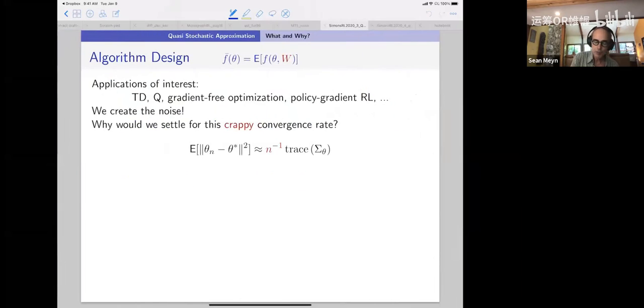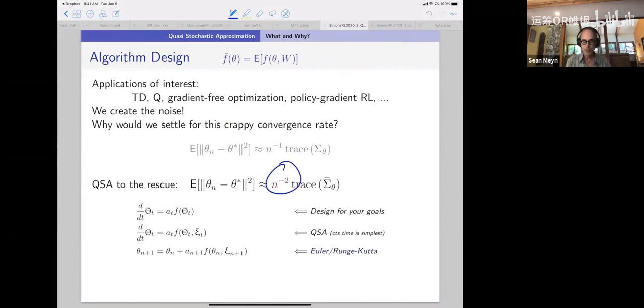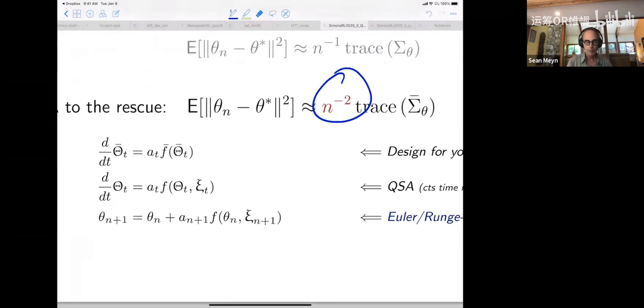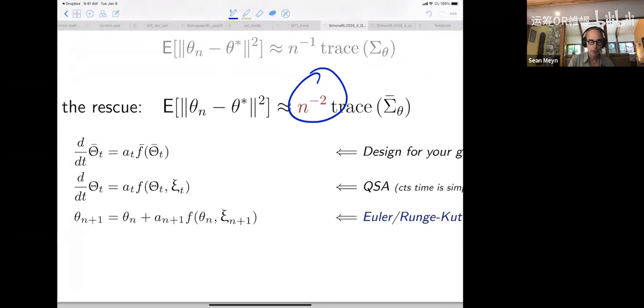So again, why would we settle for this crappy convergence rate? That is really bad. It's a one of the square root of n convergence rate. Because of the square here, that's not a good convergence rate. And so what we want to do is actually get a much faster rate of one over n squared. And that's really easy to do if you do things right. And again, the same procedure, we're going to design, I'm just repeating what I said before, we're going to design an ODE so we get convergence and all of that. And then we're going to do the same thing by sticking in noise here.